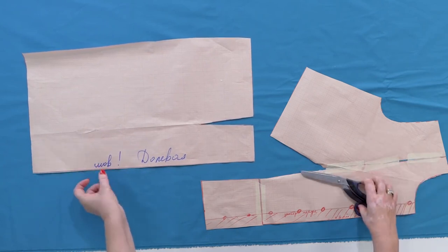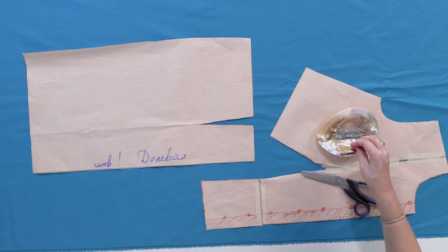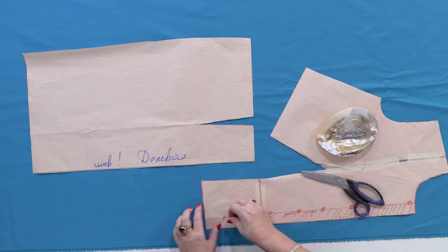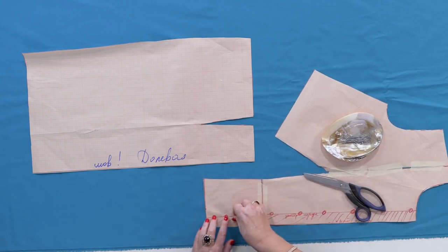Now, the front consists of the upper and the lower details. That's not all. I'm going to cut only the front. And later, I'll pin it to a dummy to show you the result. I'm not going to sew the whole dress.